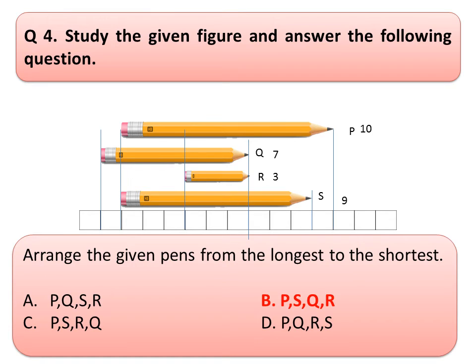And the correct answer is... Now, look at the solution. Here, pencil P is 10 blocks long. And pencil Q is 7 blocks long. Pencil R is 3 blocks long. And pencil S is 9 blocks long. So, the correct answer is option B. P, S, Q, R.